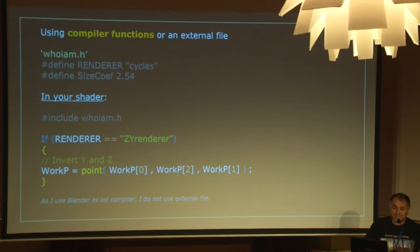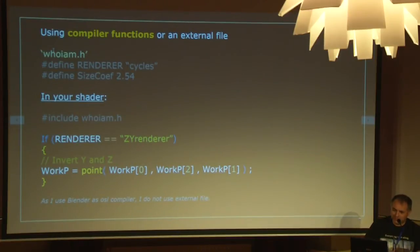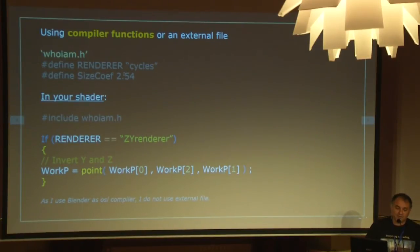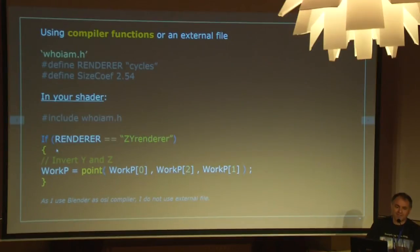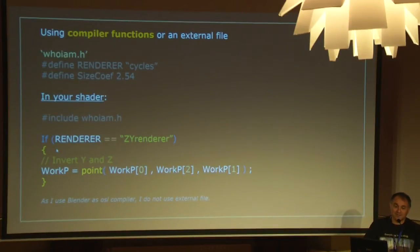There is a way to have this automated by the pre-compiler with an external file — I call it 'who I am.' Do not do this in Unix, because 'whoami' is a Unix instruction. So I say what the renderer is and the size factor, and then I apply it. Usually I don't use it, because I'm compiling shaders as much as possible in Blender — so it's always Blender, or Cycles.